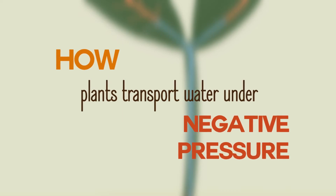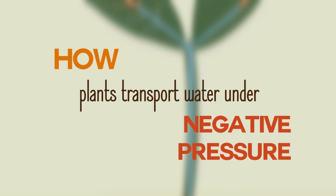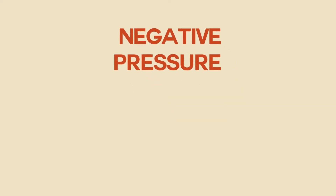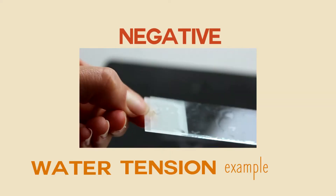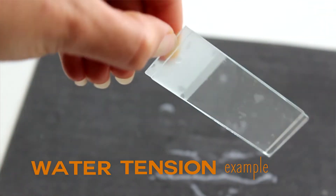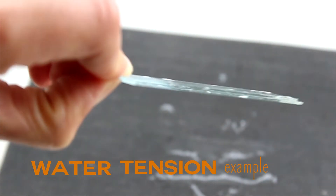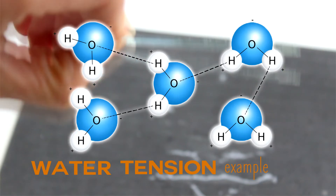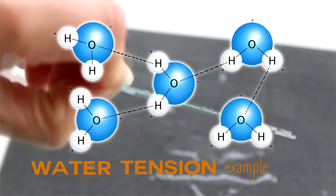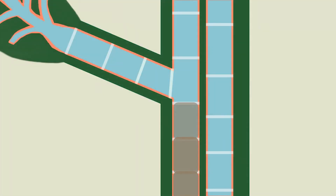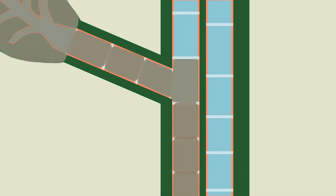So how do plants transport water under negative pressure? Negative pressure means that tension is applied to xylem sap, which can sustain these forces because of hydrogen bonds between water molecules. This means that xylem sap in the tree does not spontaneously become water vapor, but there is a risk for air entry by large bubbles.